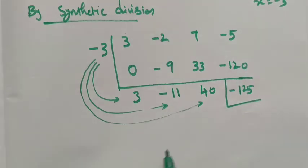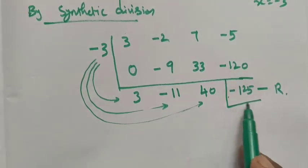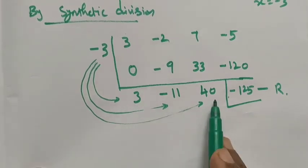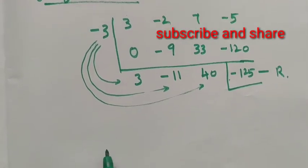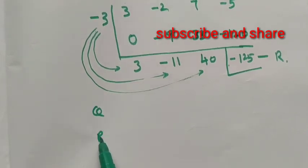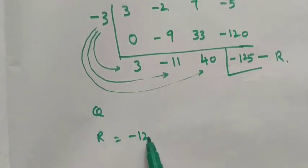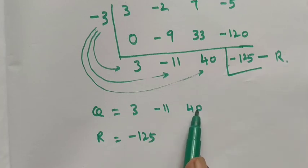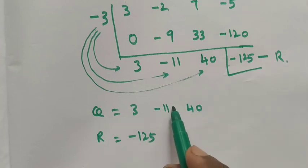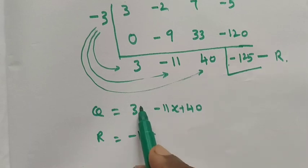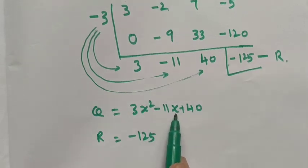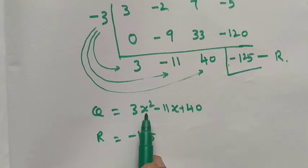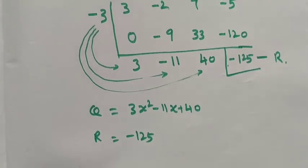The last term, -125, is the remainder. The remaining terms form the quotient. The remainder is -125. The quotient should be written using the coefficients in order: constant, x, x² — giving the quotient polynomial. Thank you, students.